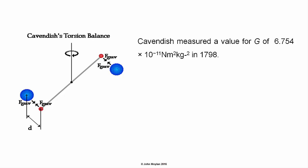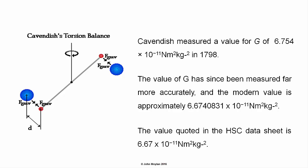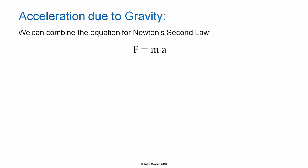The value Cavendish obtained for G was 6.754 × 10⁻¹¹ N·m²·kg⁻². The value of G has since been measured far more accurately, and the modern value is approximately 6.6740831 × 10⁻¹¹ N·m²·kg⁻². The value quoted in the HSC data sheets is 6.67 × 10⁻¹¹ N·m²·kg⁻².